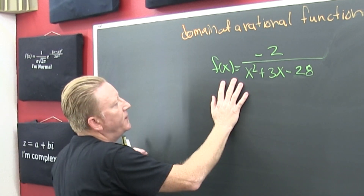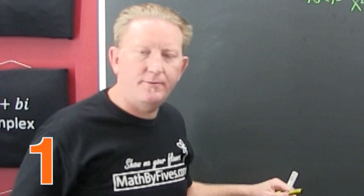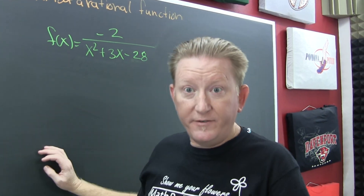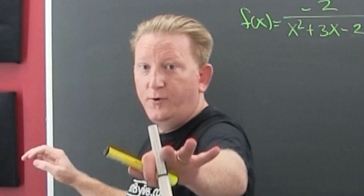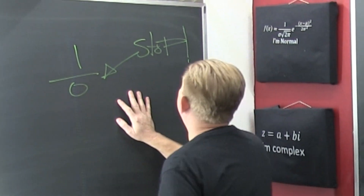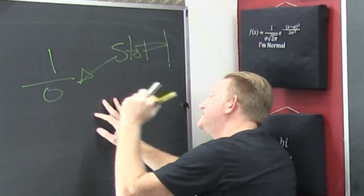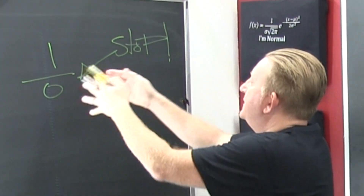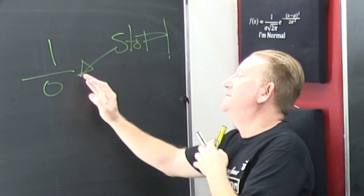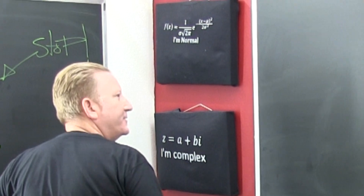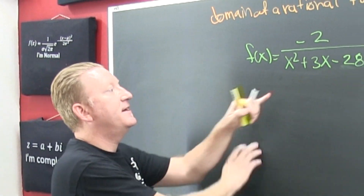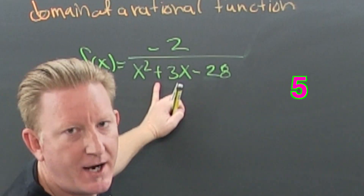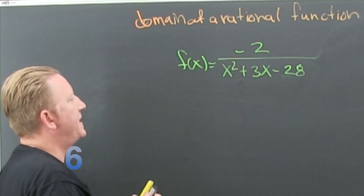Well, you know, you can never divide by zero. You can never divide by zero. Please stop trying to do that — that's bad. I'm just trying to show you: you can never divide by zero.